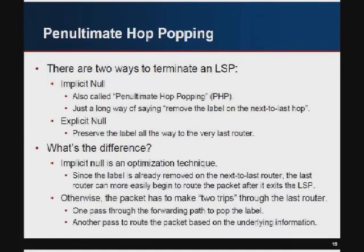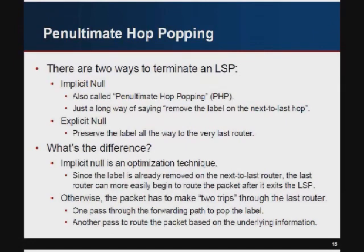There's a concept called penultimate hop popping — basically having the router before the last one pop the label instead of the last router. There are two ways to terminate an LSP. One is implicit null, or penultimate hop popping, where the label is popped before the final router so that router doesn't have to do two steps. You can also configure explicit null, which adds additional load to the last router — it may have to run the packet through its forwarding engine twice, cutting routing capacity in half. It's just an optimization; explicit null is there as an option when certain features require it.